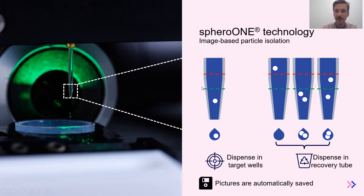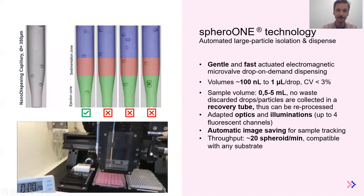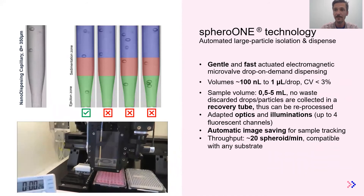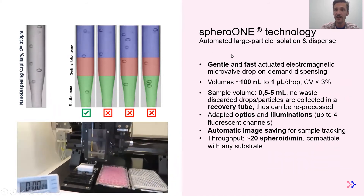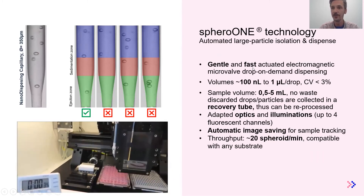This is what we use to enable our automated and efficient single particle isolations. If you have a single particle in the ejection zone, the robot will move on top of the target well and dispense the drop. When there are no particles or multiple particles, the drop is directly ejected and recovered into a collection tube. The system can automatically save pictures of the isolated objects, allowing you to review what happened during the isolation process. Combining precision liquid handling with imaging and robotics, we achieve an automated large particle isolation and dispensing solution.